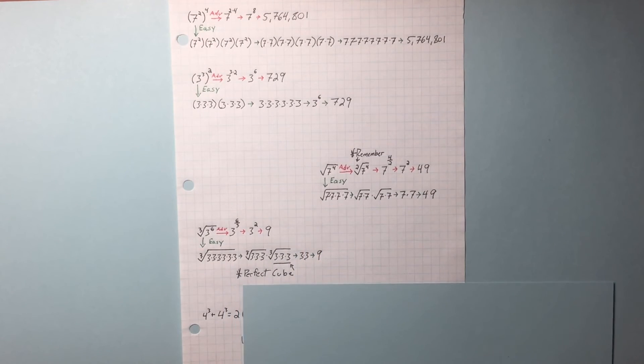The answer is 9. So what if we have something like this? 4 to the 3rd plus 4 to the 3rd. You're going to have, in total, two 4 to the 3rds. Plus and minus works out like this as long as the base is the same.